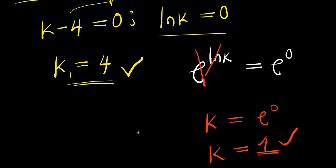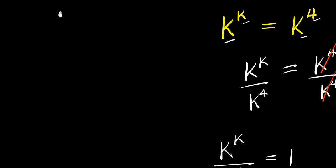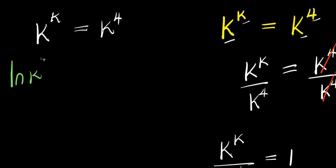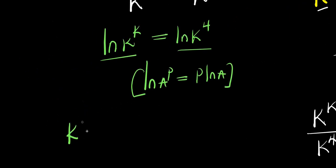We have gotten two values for k: k equals 4 and k equals 1. Now looking at this equation k^k equals k^4, I can also solve by taking the natural log of both sides right away without dividing first. Applying the rule that ln(a^p) equals p times ln(a), we get k times natural log k equals 4 times natural log k.